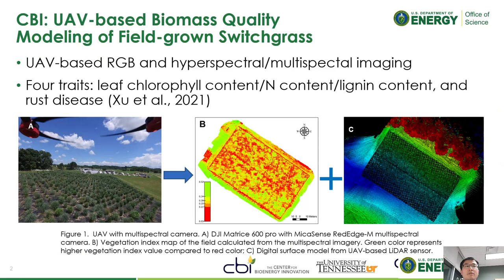Switchgrass is one of the best candidate species for biofuel production. In our previous study, we explored the feasibility of applying UAV remote sensing into the high-throughput phenotyping for switchgrass. We successfully developed models for automated assessment of phenotypic and sustainability traits such as chlorophyll, nitrogen, lignin content, and Ross disease, as well as biomass using UAV-based LiDAR and multispectral data.